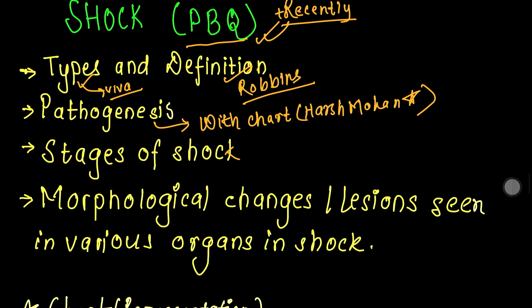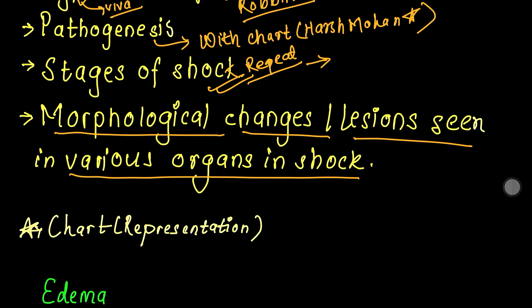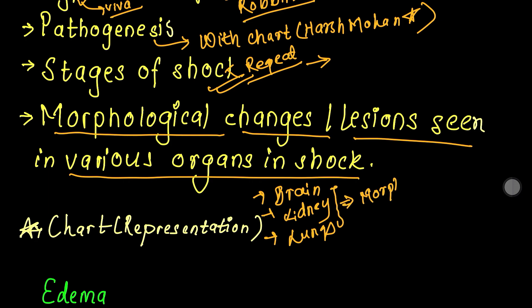The stages of shock are an easy and common repeat question. Progressive versus non-progressive stages are tested. The other important questions involve morphological changes or lesions seen in various organs in shock — in the brain, skin, and lungs. These are the microscopic changes that we have to know.